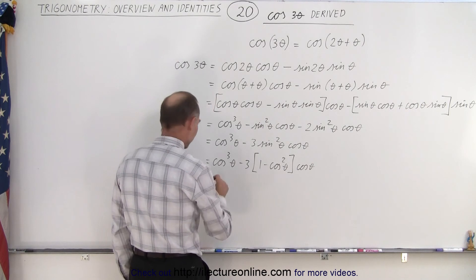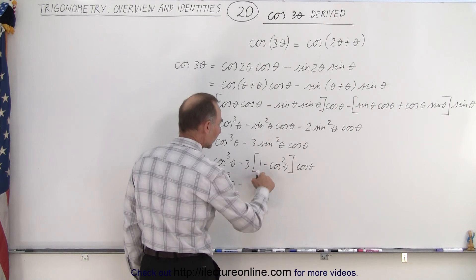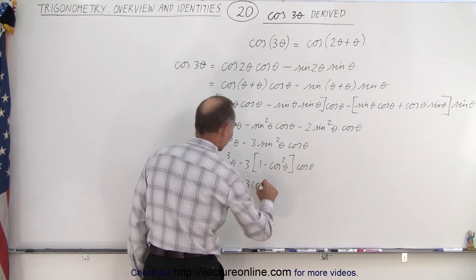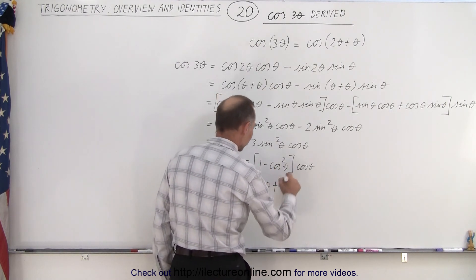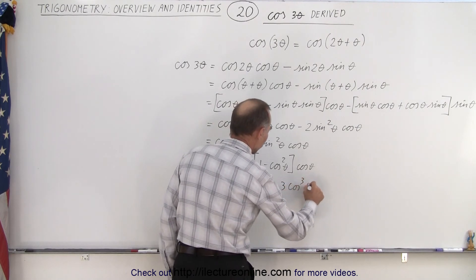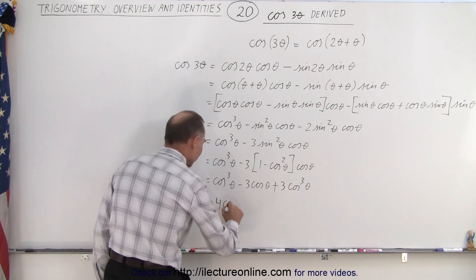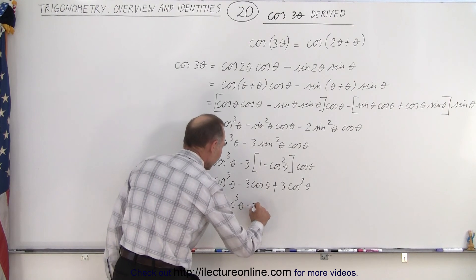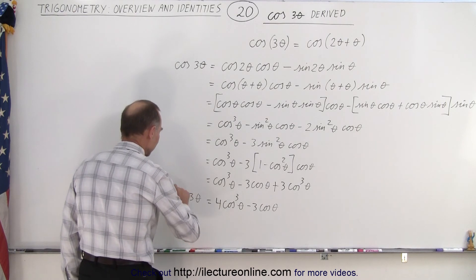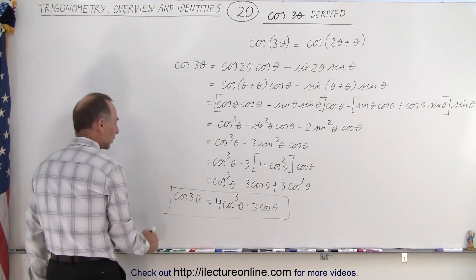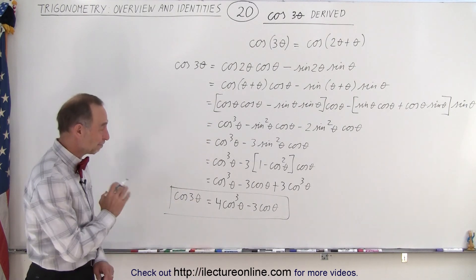Simplifying that: this equals cosine cubed theta minus 3 times cosine of theta. Then minus times minus becomes plus 3 times cosine squared times cosine, giving 3 times cosine cubed theta. We can combine the common terms, so this becomes 4 times cosine cubed theta minus 3 times cosine of theta. That is equal to cosine of 3 theta — the identity where we replace the cosine of 3 times the angle by an expression that has only the cosine of 1 times the angle. And that is how it's done.